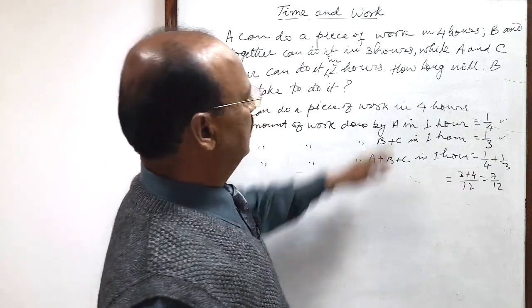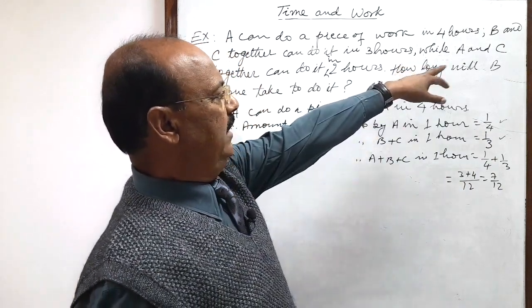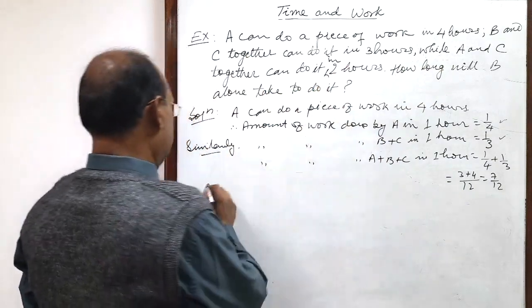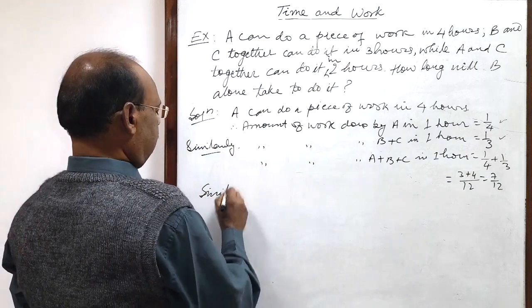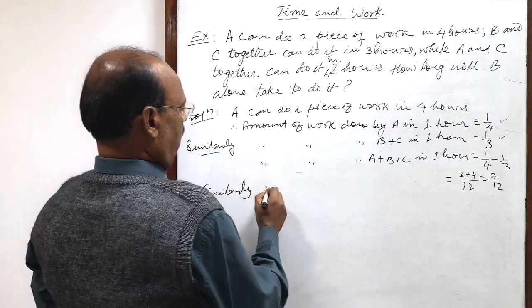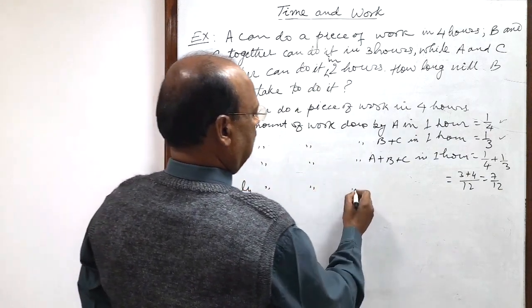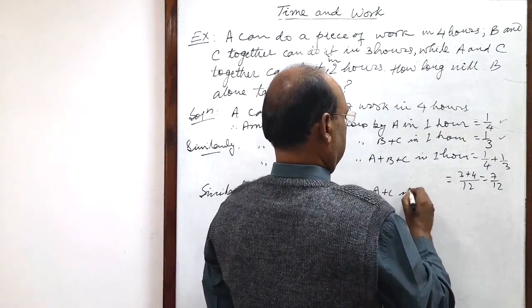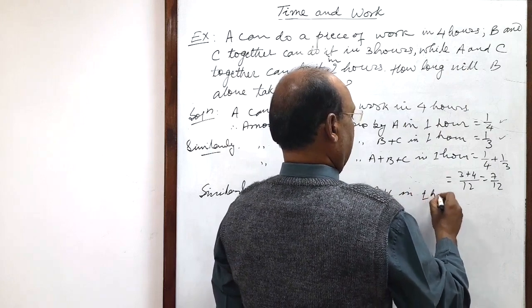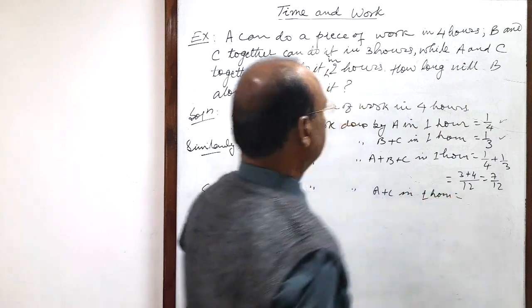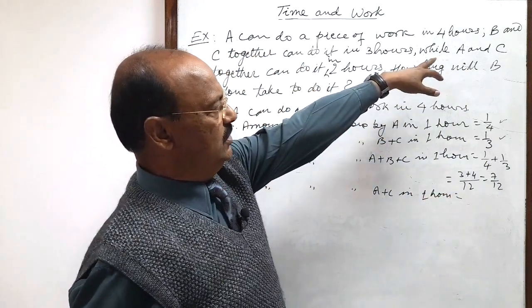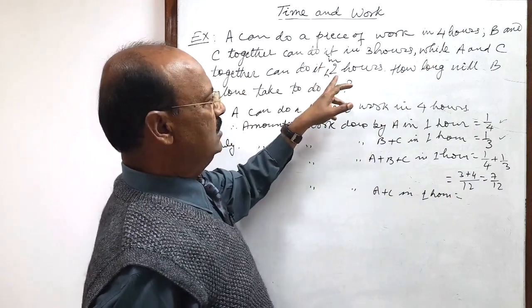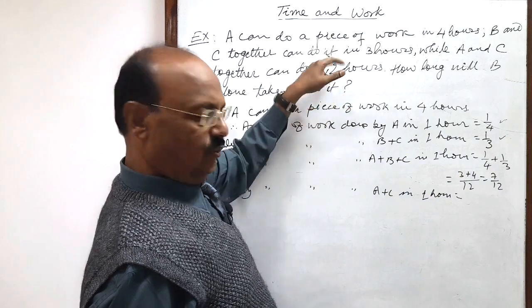Now, let us use the last statement: A and C together can do it in 2 hours. Similarly, the amount of work done by A and C in 1 hour — you see this statement, A and C together can do it in 2 hours — so in 1 hour, that is 1 by 2.